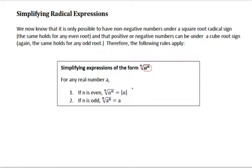That's why, since we don't know the value of a whether it is positive or negative, we have to put absolute value around a whenever we simplify an even index radical.